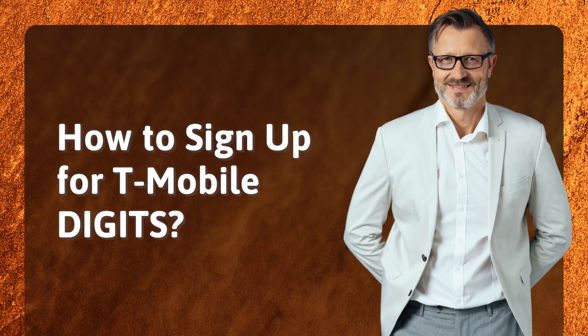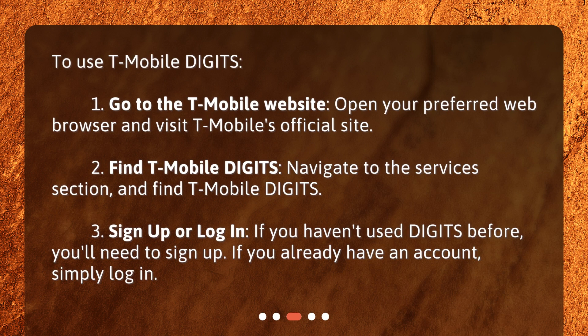How to sign up for T-Mobile Digits. To use T-Mobile Digits: 1. Go to the T-Mobile website — open your preferred web browser and visit T-Mobile's official site. 2. Find T-Mobile Digits — navigate to the services section and find T-Mobile Digits. 3. Sign up or log in — if you haven't used Digits before, you'll need to sign up. If you already have an account, simply log in.